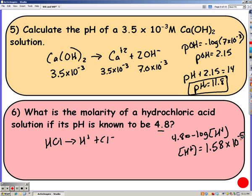And again, I would solve that by saying 10 to the negative 4.8. So if that's my hydrogen ion concentration, it's also my chlorine concentration. And because it's one to one, it's also my HCl concentration.